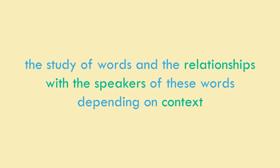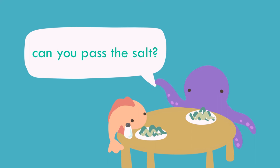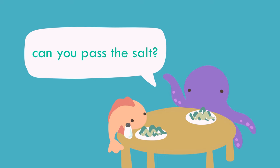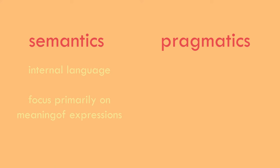Pragmatics is the study of words and their relationships with the speakers of these words, depending on the context. It looks beyond the literal meaning of language, diving into how both direct and indirect meanings are created. For example, 'Can you pass the salt?' — we know the speaker isn't asking if the listener is physically capable of passing the salt. With our knowledge of pragmatics and the context of both parties having dinner together, we can conclude the speaker is requesting the listener to pass the salt. Semantics has a more internal focus on the meaning of expressions, while pragmatics has a more external focus on context and implied meaning.